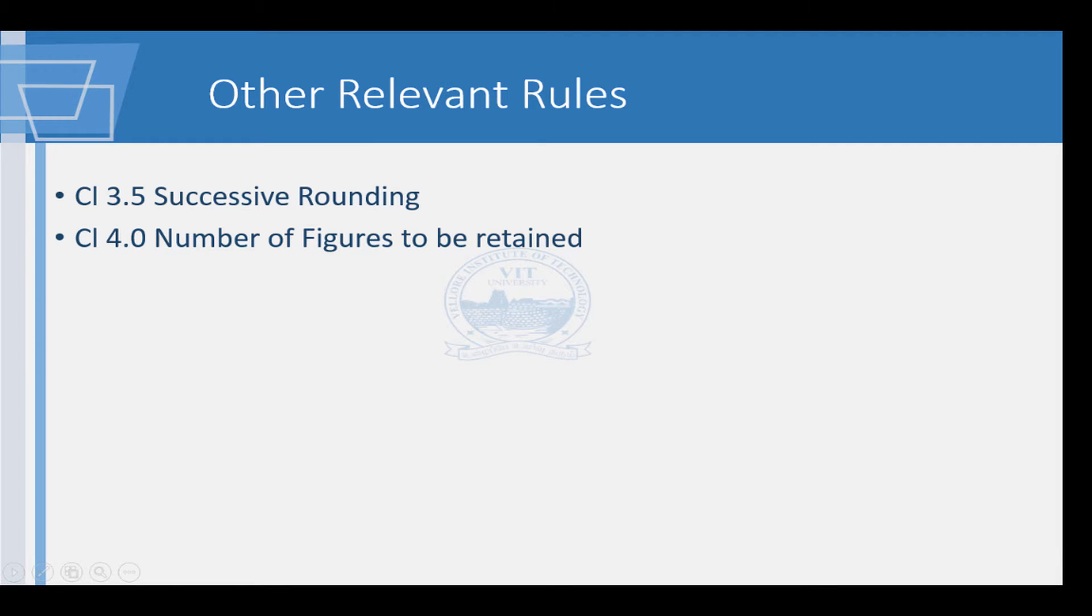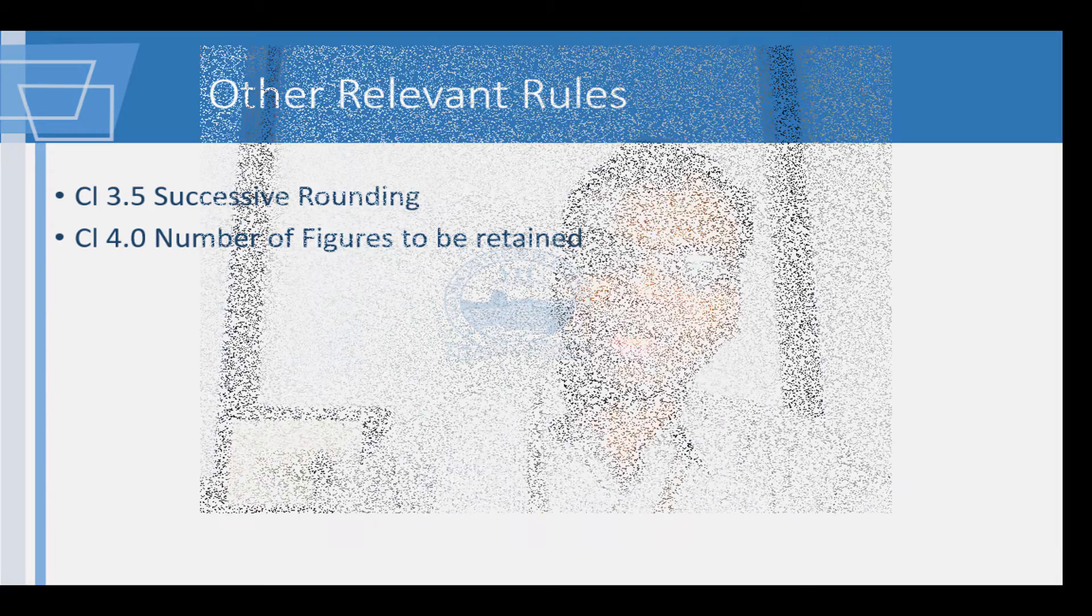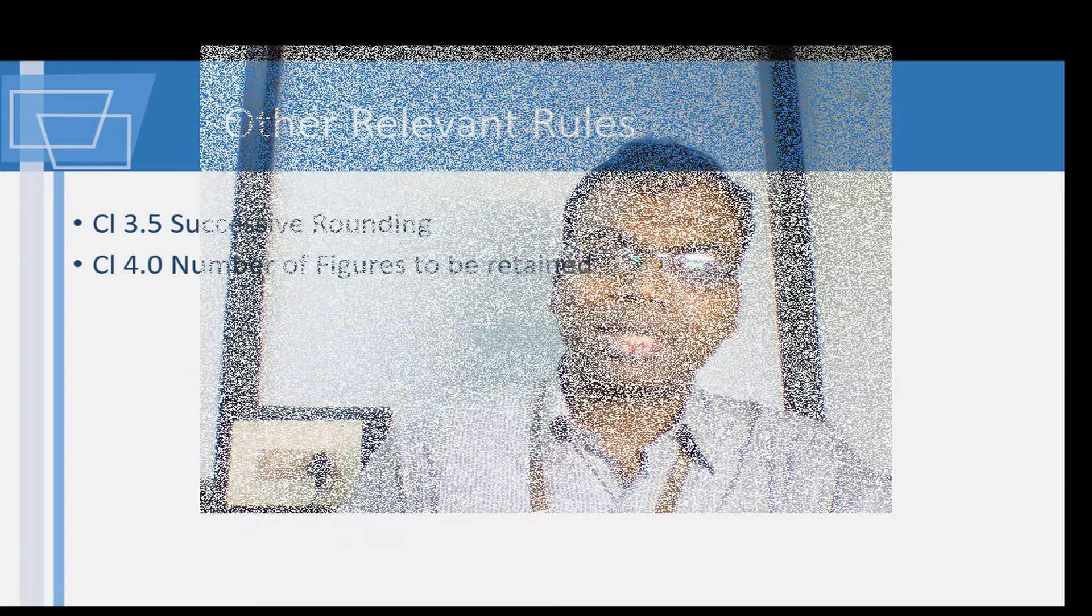Some of the other relevant rules are rules for successive rounding and number of significant figures. It is normally very tempting to keep rounding up values till a higher value is always caught. However, according to the provisions of the code, this is not acceptable. Number of figures to be retained will be as per the value of the item quantified and many times the policy of the company or agency for which quantity is estimated.